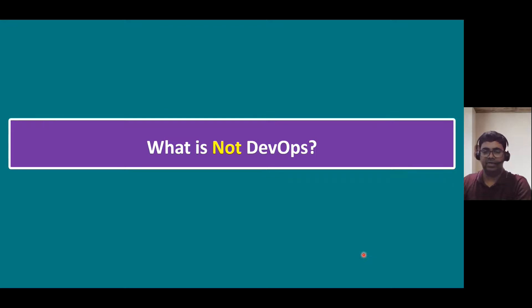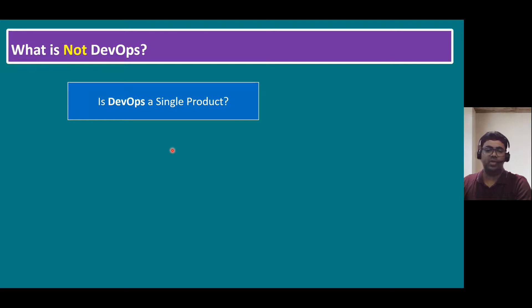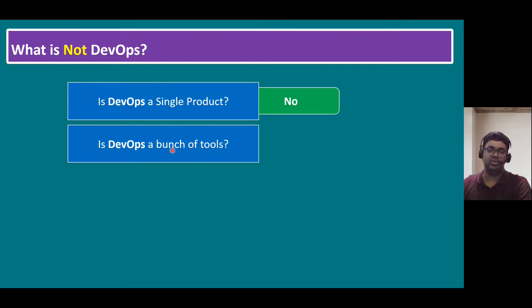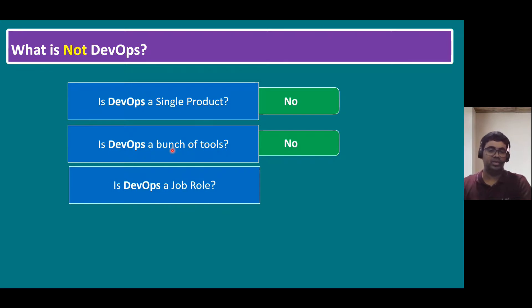Before deep-diving into enterprise-grade Kubernetes platforms, we need to understand the development process — DevOps. Before understanding the DevOps definition, we should know what DevOps is NOT. Is DevOps a single product? Definitely no. Is DevOps a bunch of tools? When you see DevOps images online, there are many tools shown, but DevOps is definitely not just a bunch of tools. Is DevOps a job role? DevOps is not a job role — DevOps architect and DevOps engineer are job roles, but DevOps itself is not.